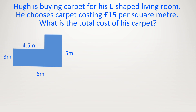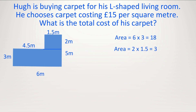Hew is buying carpet for his L-shaped living room shown below. He chooses carpet costing £15 per meter squared. What's the total cost of his carpet? We have this L-shape again — we always break it up into two rectangles, just draw a line going across. The bottom rectangle's area: 6 times 3 equals 18 meters squared. For the top rectangle: the total height is 5 meters with 3 meters on the left, so the height of this part is 2 meters. The full width is 6 meters but most of the way is 4.5 meters, so this bit is 6 minus 4.5 equals 1.5. Therefore the area is 2 times 1.5 equals 3 meters squared. Altogether 18 plus 3 equals 21 meters squared.